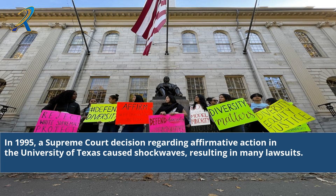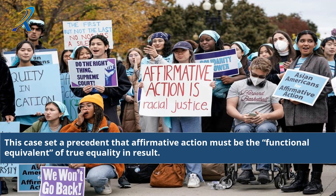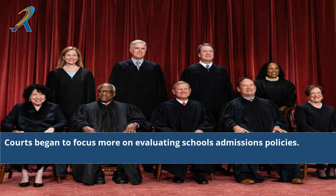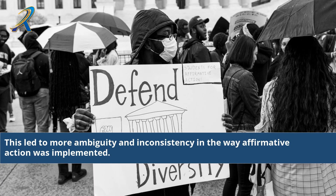In 1995, a Supreme Court decision regarding affirmative action at the University of Texas caused shockwaves, resulting in many lawsuits. This case set a precedent that affirmative action must be the functional equivalent of true equality in result. Courts began to focus more on evaluating schools' admissions policies, leading to more ambiguity and inconsistency in the way affirmative action was implemented.